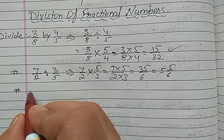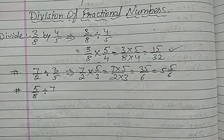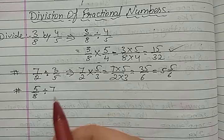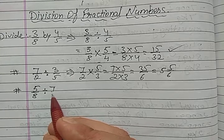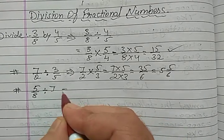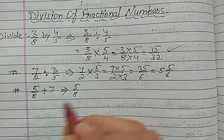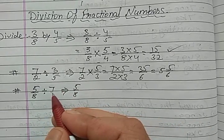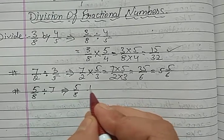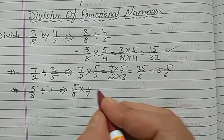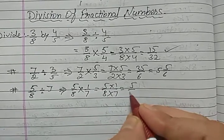Suppose we want to divide 5 upon 8 divided by 7. When a whole number is given, you can write 1 below it. You know what to do — convert the division sign into multiplication by writing the reciprocal of the divisor. The reciprocal of 7 (which is 7 upon 1) becomes 1 upon 7.